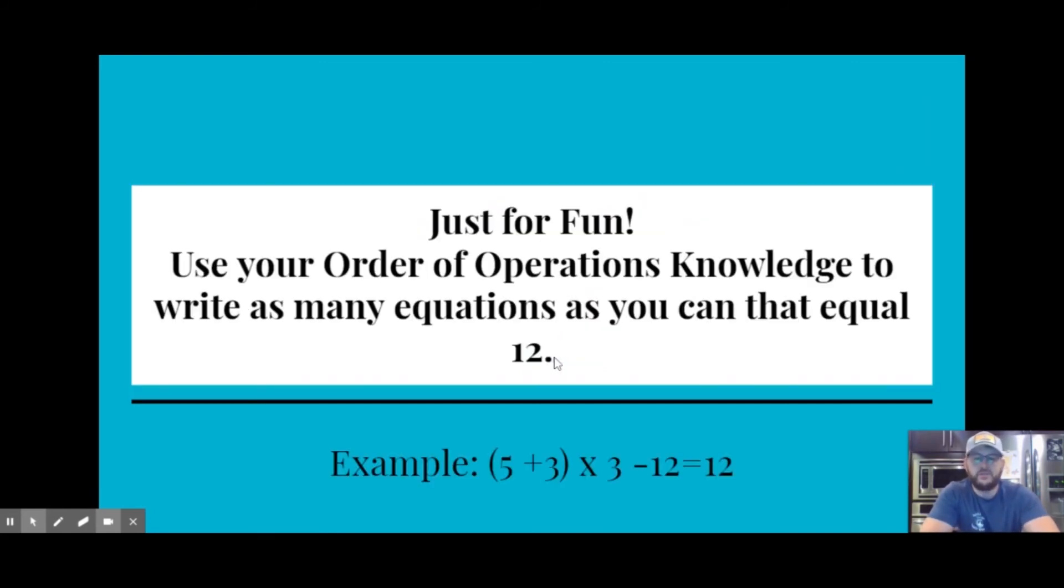With your family, I want you to try something fun. I want you to use your order of operations knowledge to write as many equations as you can that equal 12. So I've set up an example here: (5 + 3) × 3 - 12. And when you follow order of operations, you will get 12 for this example. Once you've created as many as you can think of for 12, sit down with your brother or sister or your mom or dad and think of another number. It could be a three-digit number. It could be a four-digit number. Really challenge yourself to see if you can use order of operations to create as many equations as you can.